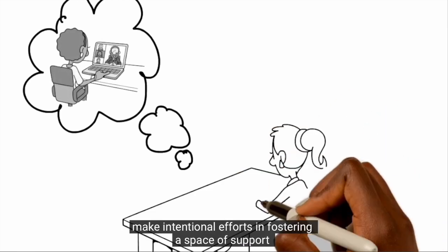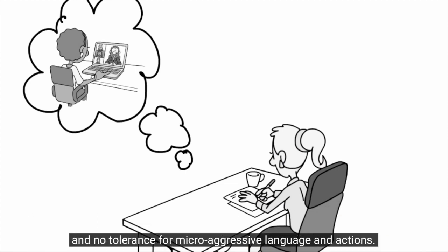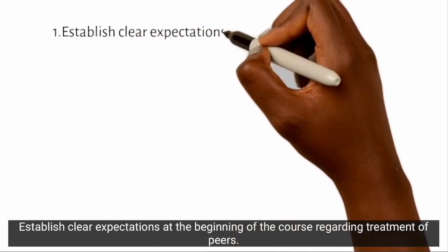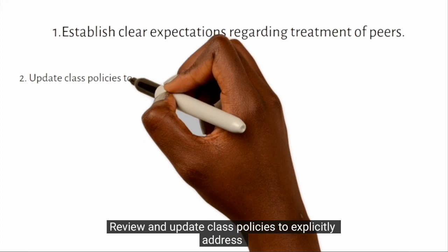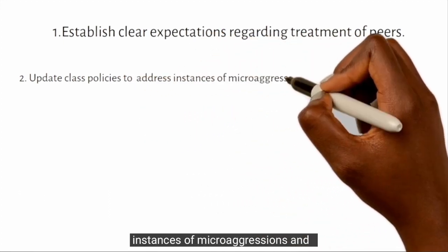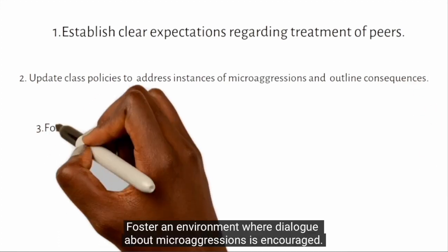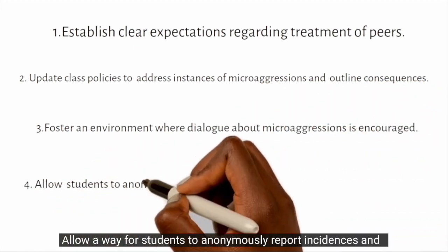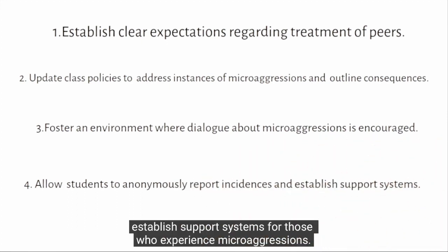Let's return back to the narrator scenario. As a professor, you can make intentional efforts in fostering a space of support and no tolerance for microaggressive language and actions. Consider these five recommendations. First, establish clear expectations at the beginning of the course regarding treatment of peers. Second, review and update class policies to explicitly address instances of microaggressions and clearly outline consequences for such inappropriate, harmful behavior. Third, foster an environment where dialogue about microaggressions is encouraged, and allow a way for students to anonymously report incidences and establish support systems for those who experience microaggressions.